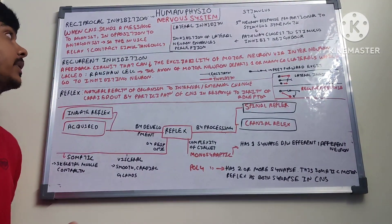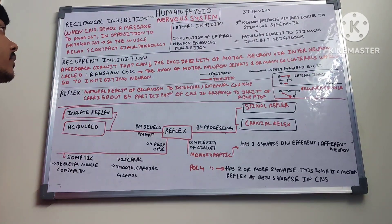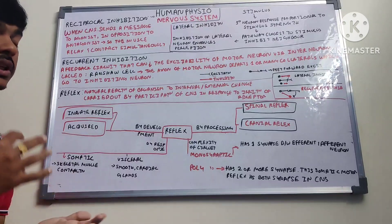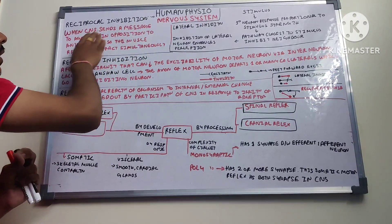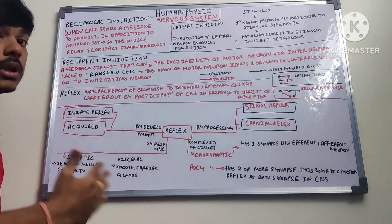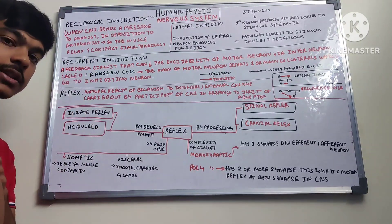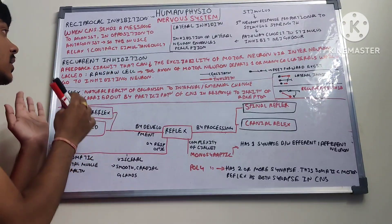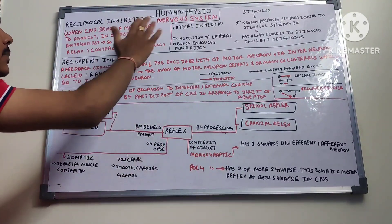There are a few more types of inhibition important from an exam point of view. Reciprocal inhibition: when the CNS sends a response to an agonist — for example, acetylcholine is released to stretch a muscle — the CNS simultaneously sends an opposing response to relax that muscle. Contraction and relaxation take place simultaneously; you get a response and then relax it — that is reciprocal inhibition.